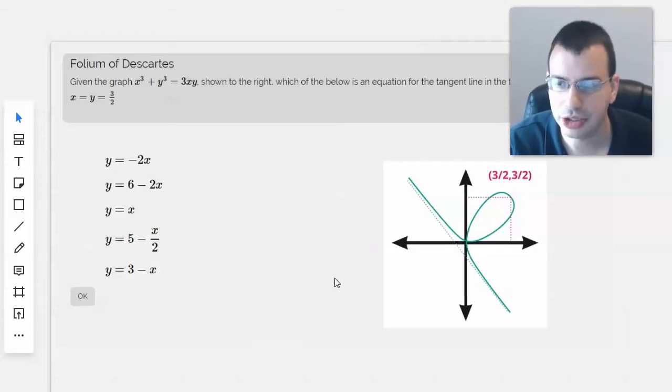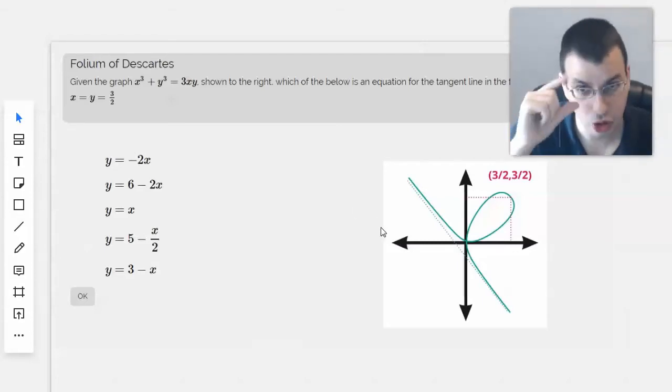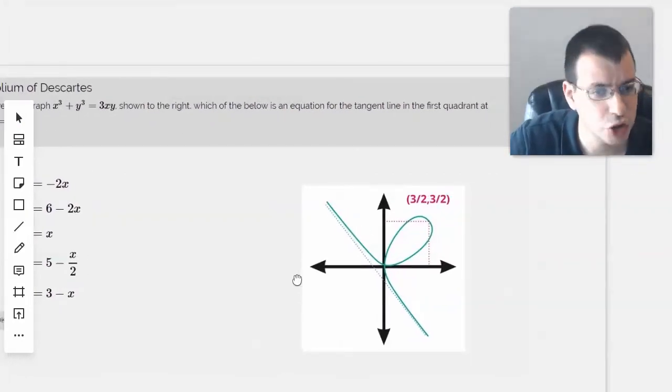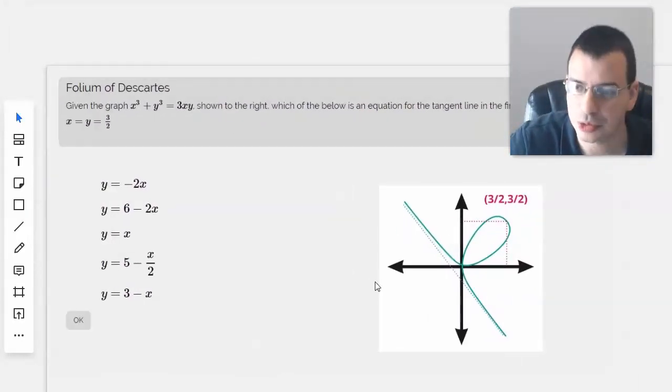Given the graph x cubed plus y cubed equals 3xy shown to the right, which of the below is an equation for the tangent line in the first quadrant at x equals y equals 3 halves? So right there, tangent line.